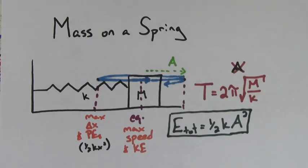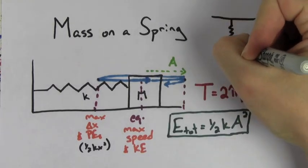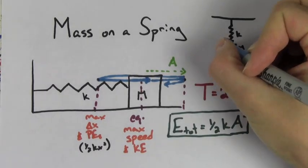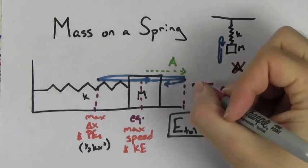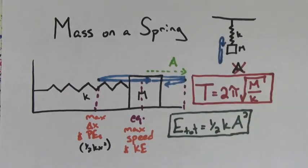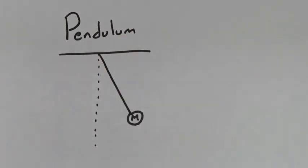If you instead hang the mass-spring system from the ceiling and let it oscillate, the period will still be 2π√(m/k). It does not depend on the gravitational acceleration.